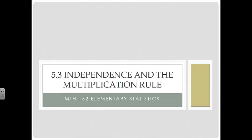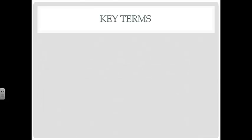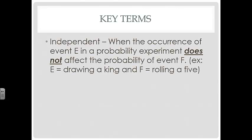5.3 Independence and the Multiplication Rule. Let's take a look at some key terms. Independent is when the occurrence of event E in a probability experiment does not affect the probability of event F.